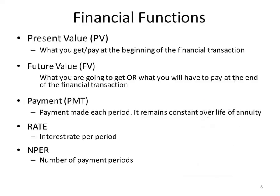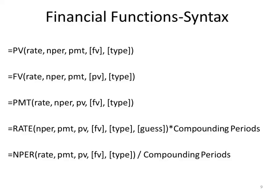The NPER function gives us the number of payment periods. Here's the syntax for all of the functions. The present value function has a rate argument, an NPER argument, a payment argument, a future value argument, and a type argument. There is also a rate function with its own arguments. For the rate function, you will multiply the entire result by the number of compounding periods. For the NPER function, you will always divide the entire result by the number of compounding periods.